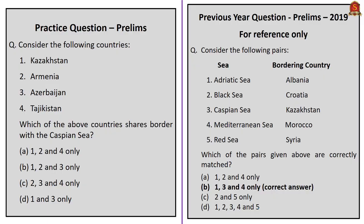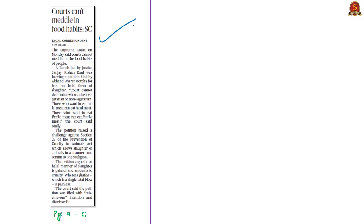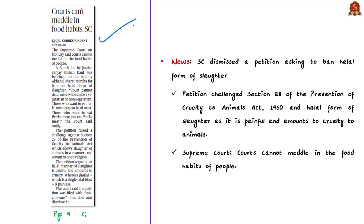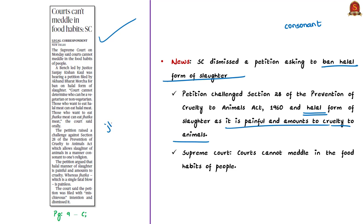The next news article talks about observations made by the Supreme Court on a petition challenging Section 28 of the Prevention of Cruelty to Animals Act of 1960. The petition challenged that this section allows slaughter of animals in a manner consonant with a person's religion, arguing that the halal form of slaughter is painful and amounts to cruelty and should be banned. The word 'halal' is an Arabic word meaning lawful or permissible. In halal slaughter, animals are killed with a cut to the jugular vein, carotid artery, and windpipe, and left until the blood drains out completely.